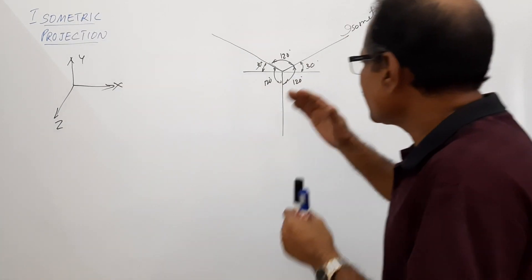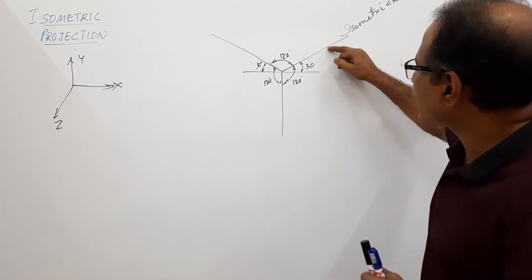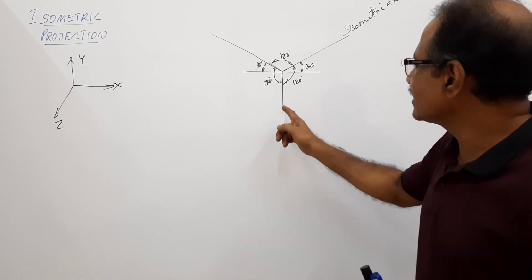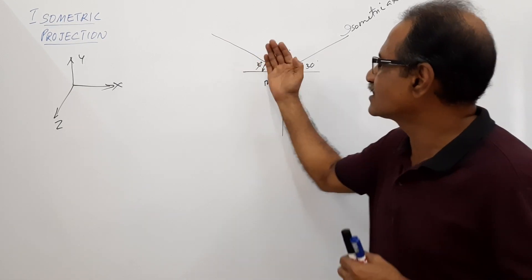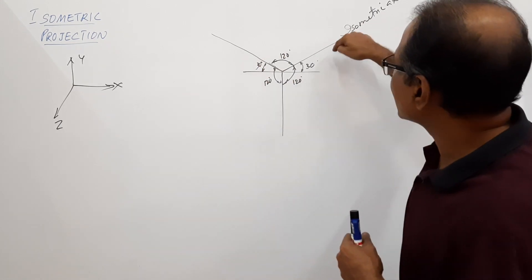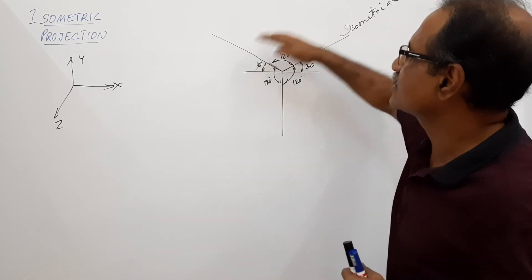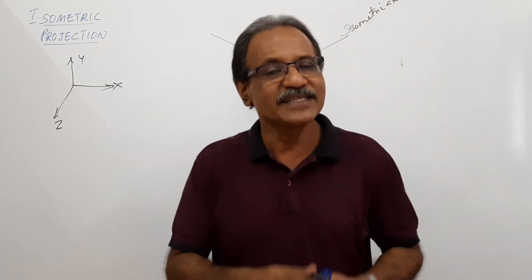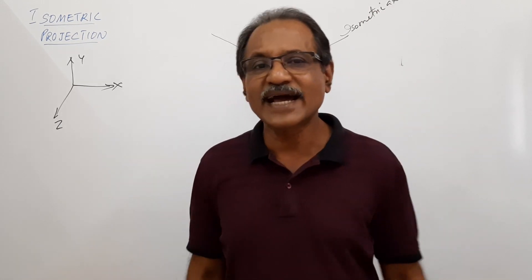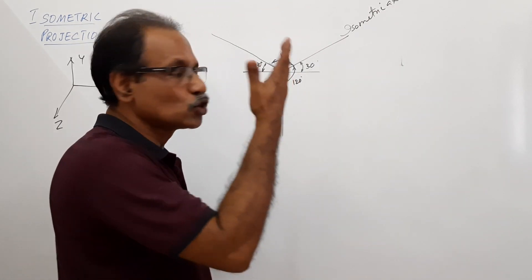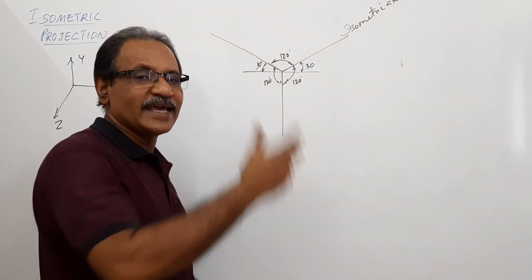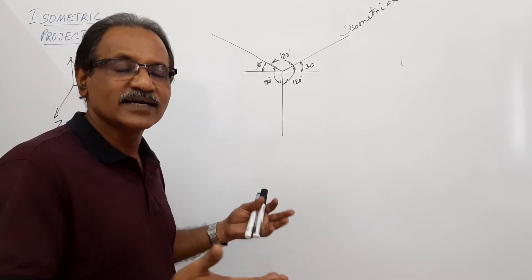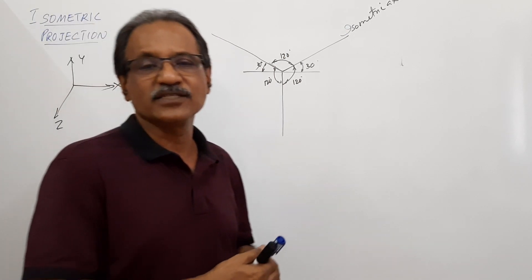The plane constituted by any two of these isometric axes is called an isometric plane. Since there are three isometric axes, these three axes make three isometric planes. There are three isometric axes and three isometric planes.